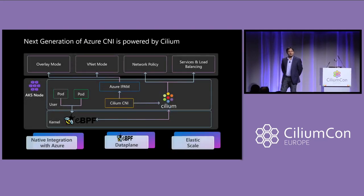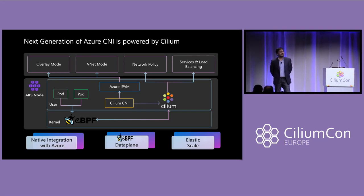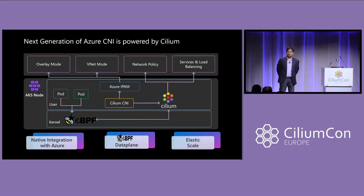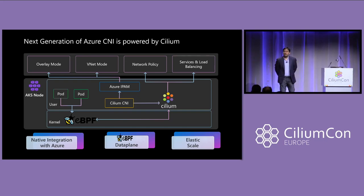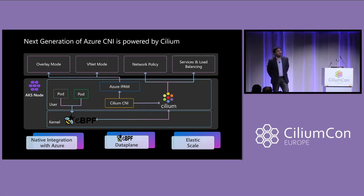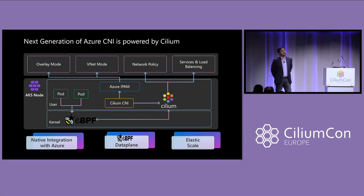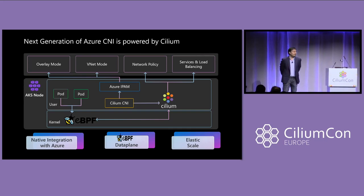So last year, we announced that we're bringing Cilium to Azure. Since then, we have made significant progress in partnership with Isovalent folks. We want to make sure that if you're a customer of Azure, you use Cilium as the best data plane on Azure, and if you're a customer of Cilium, you use Azure because Azure is the best place to run Cilium on. Today, we are going to make several announcements in that direction.